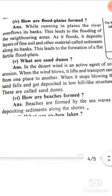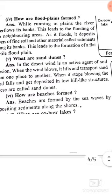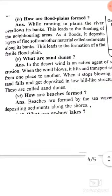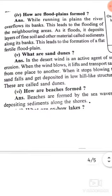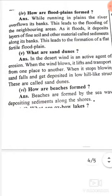What are Sand Dunes? In the desert, wind is an active agent of erosion. When the wind blows, it lifts and transports sand. When the wind stops blowing, the sand falls and gets deposited, forming hill-like structures. These hill-like structures made of deposited sand are called Sand Dunes.